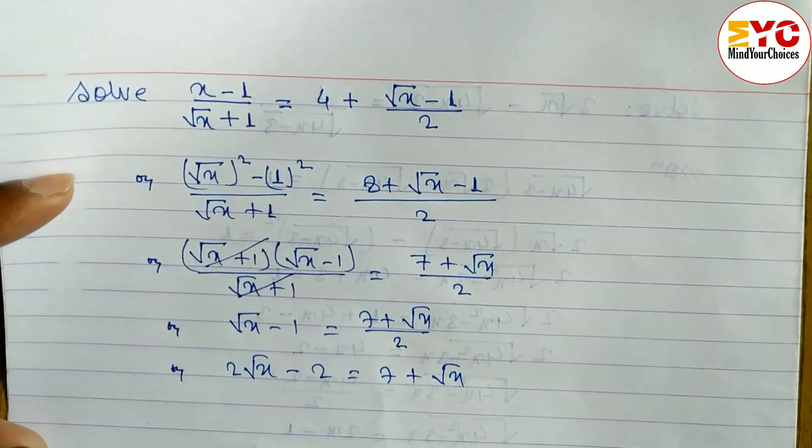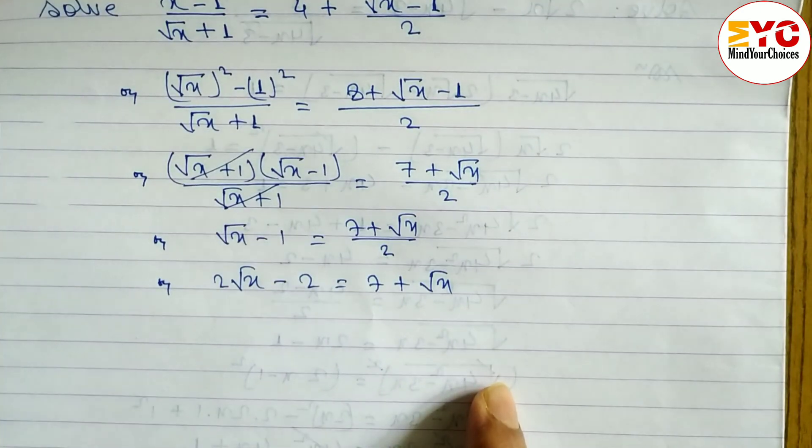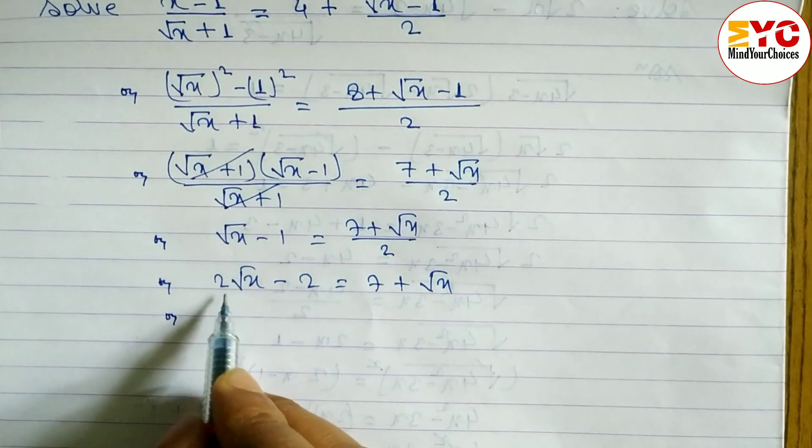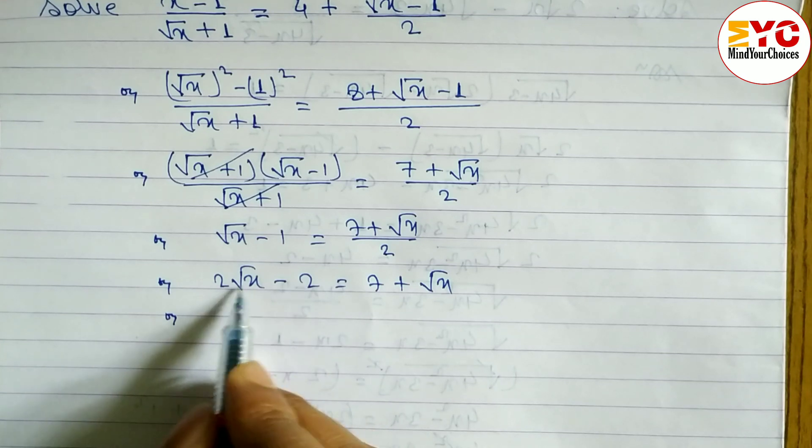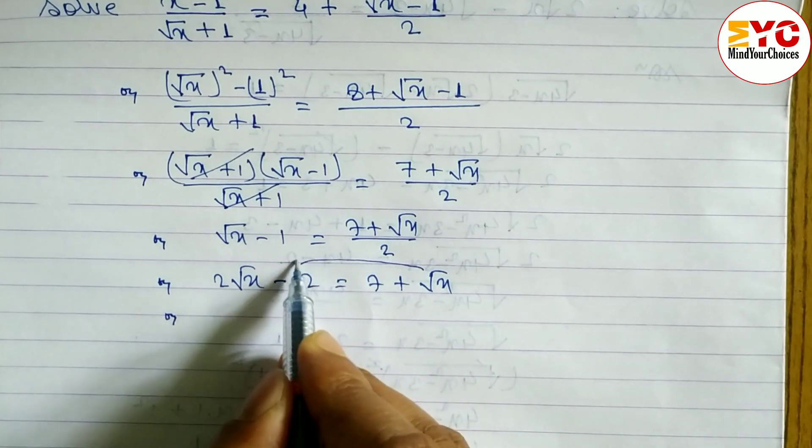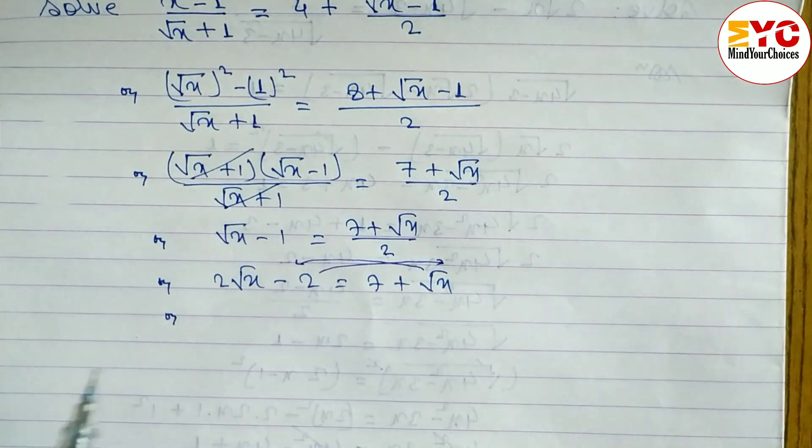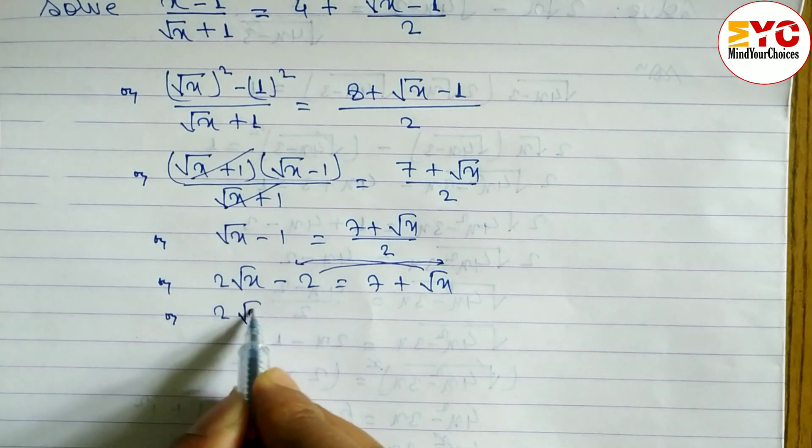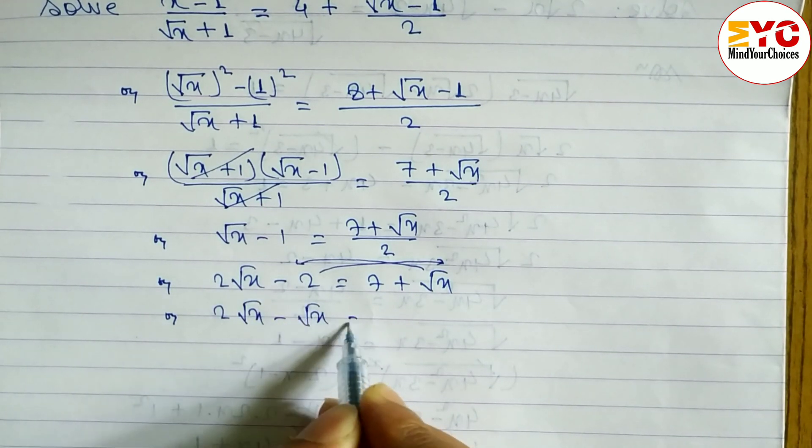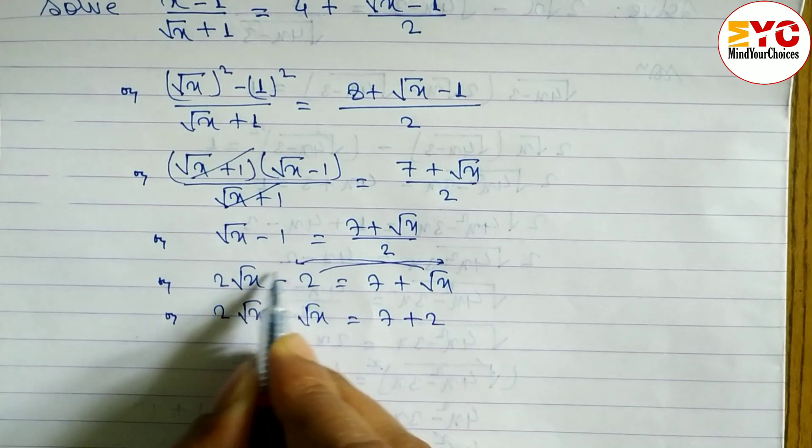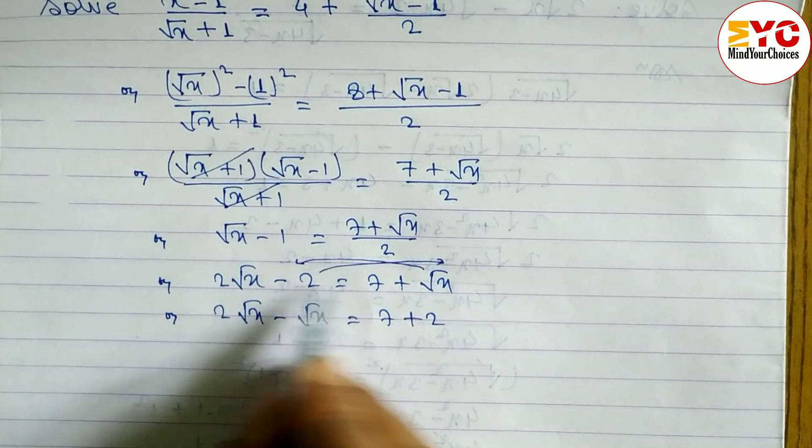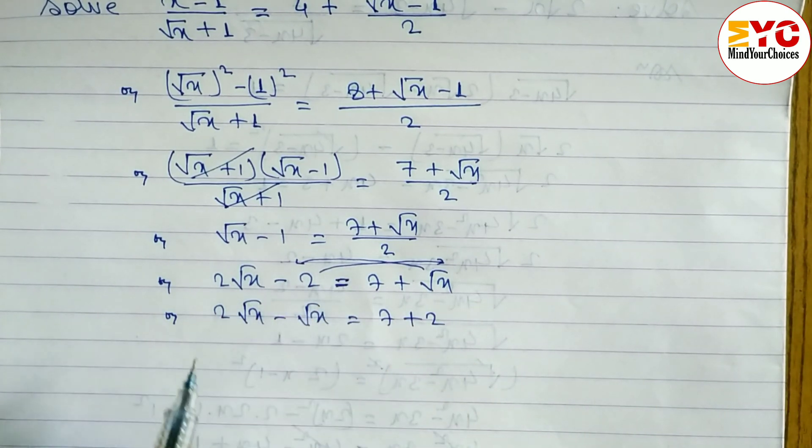Before squaring, we need to arrange the terms. Let's move similar terms together: 2√x minus √x equals 7 plus 2. When we move -2 to the right side, it becomes +2.